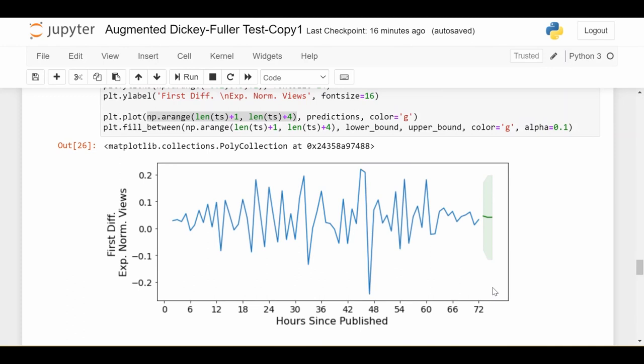We want to know what are the predictions in terms of views, not first difference, exponentiated, normalized views. This is not really helpful. So how do we take these predictions and transform it back, undo all of the transformations?